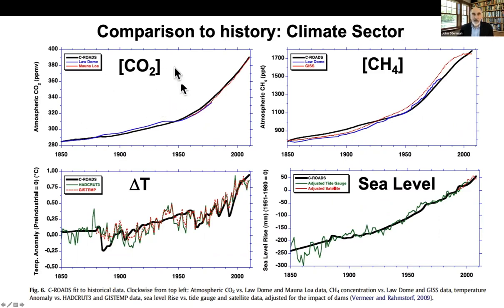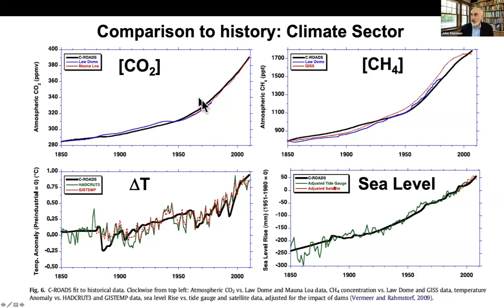This graph in the top left shows the simulated versus actual concentration of carbon dioxide in the atmosphere from 1850 up through about now, in parts per million. Pre-industrial, it was about 280 parts per million. Today it's well over 400 — the most recent data put it at about 410 parts per million. The historical data comes from the Mauna Loa Observatory starting in 1958, and before that from ice cores. And the model tracks that essentially perfectly.